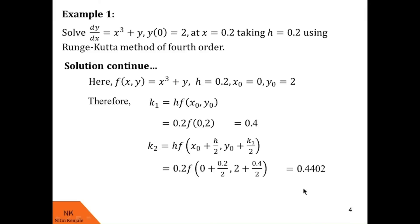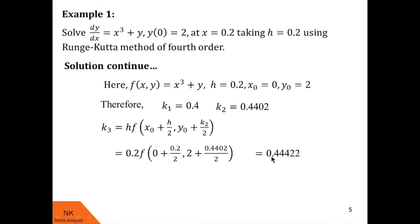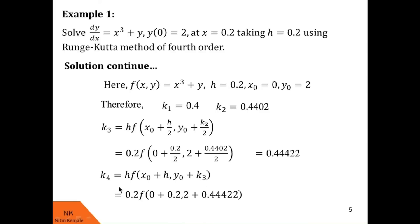Carrying forward k₁ and k₂, we find k₃, defined as h·f(x₀ + h/2, y₀ + k₂/2). Substituting values, we find k₃ = 0.44422. Finally, k₄ is defined as h·f(x₀ + h, y₀ + k₃), where x₀ = 0, h = 0.2, y₀ = 2, and k₃ = 0.44422. After calculation, k₄ = 0.490444.